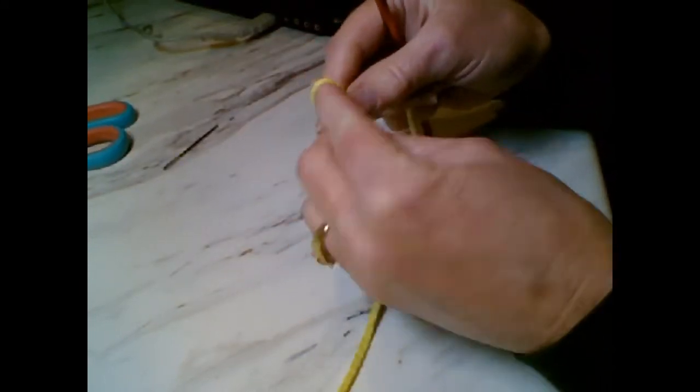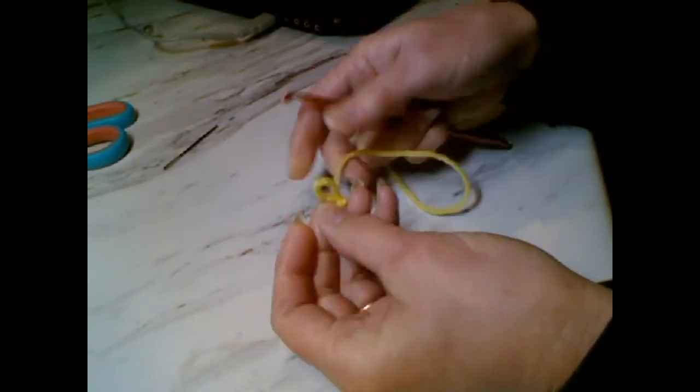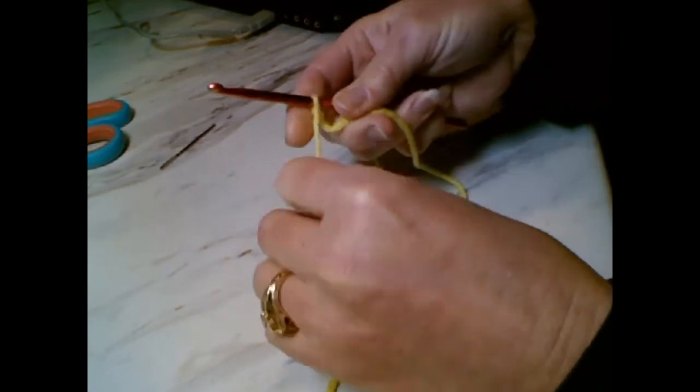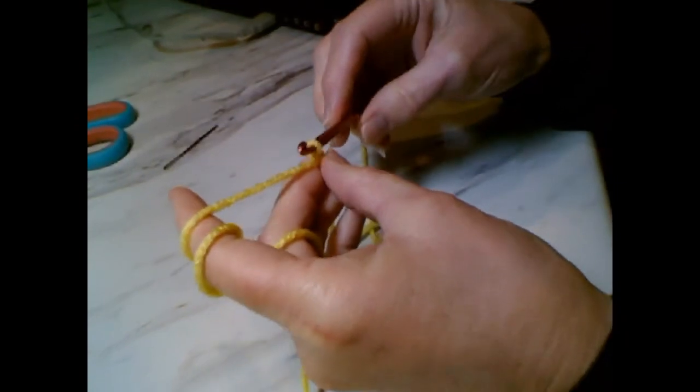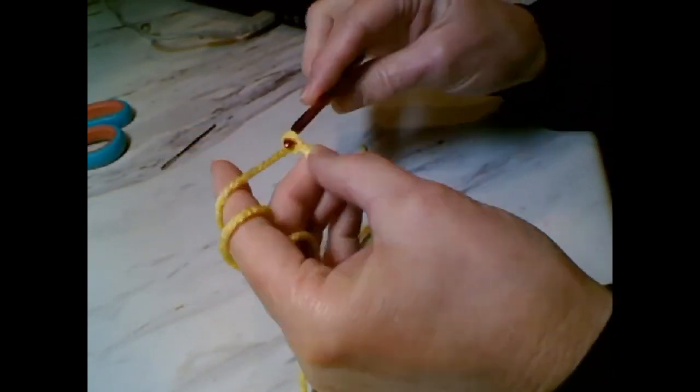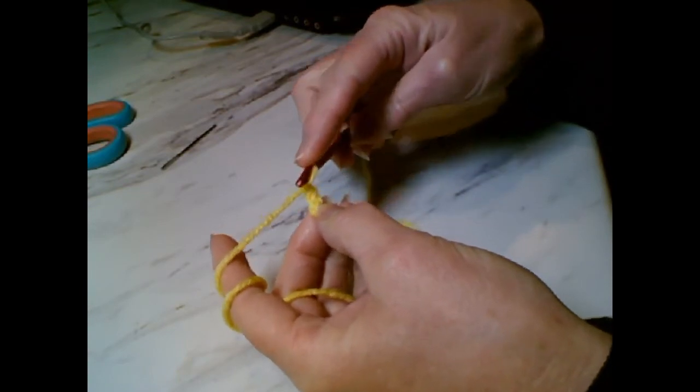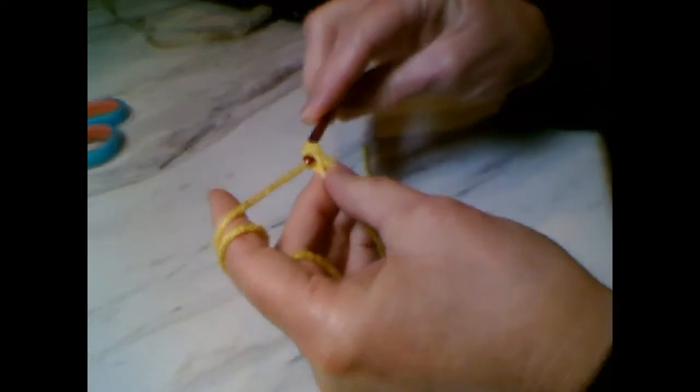What you do to start with is make your slipknot and put it on your crochet hook. You're starting with the point of the beak, so you're going to make two chains. Then you go to the second chain from the hook and make two single crochets.